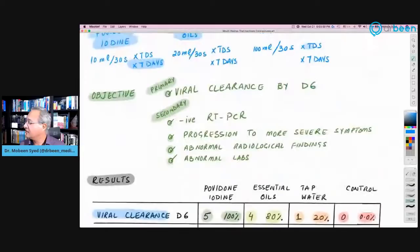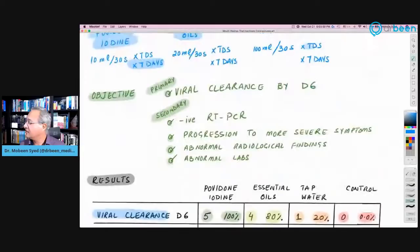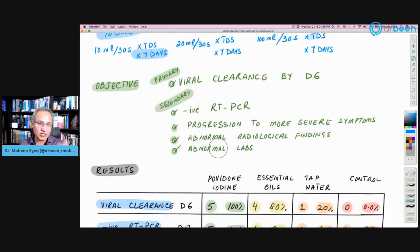So now, what was the result? Let's look at their objectives. What they wanted to see was that if a patient of SARS-CoV-2, COVID-19, is gargling daily three times, will they have earlier clearance of the virus? And by definition, they said by day six, the virus is gone. RT-PCR are negative, two RT-PCR. Secondary goal was to see if the RT-PCR becomes negative fast. Then another secondary goal was the progression of the symptoms do not go towards severe. Abnormal radiological findings are not found. And then abnormal labs are not found.